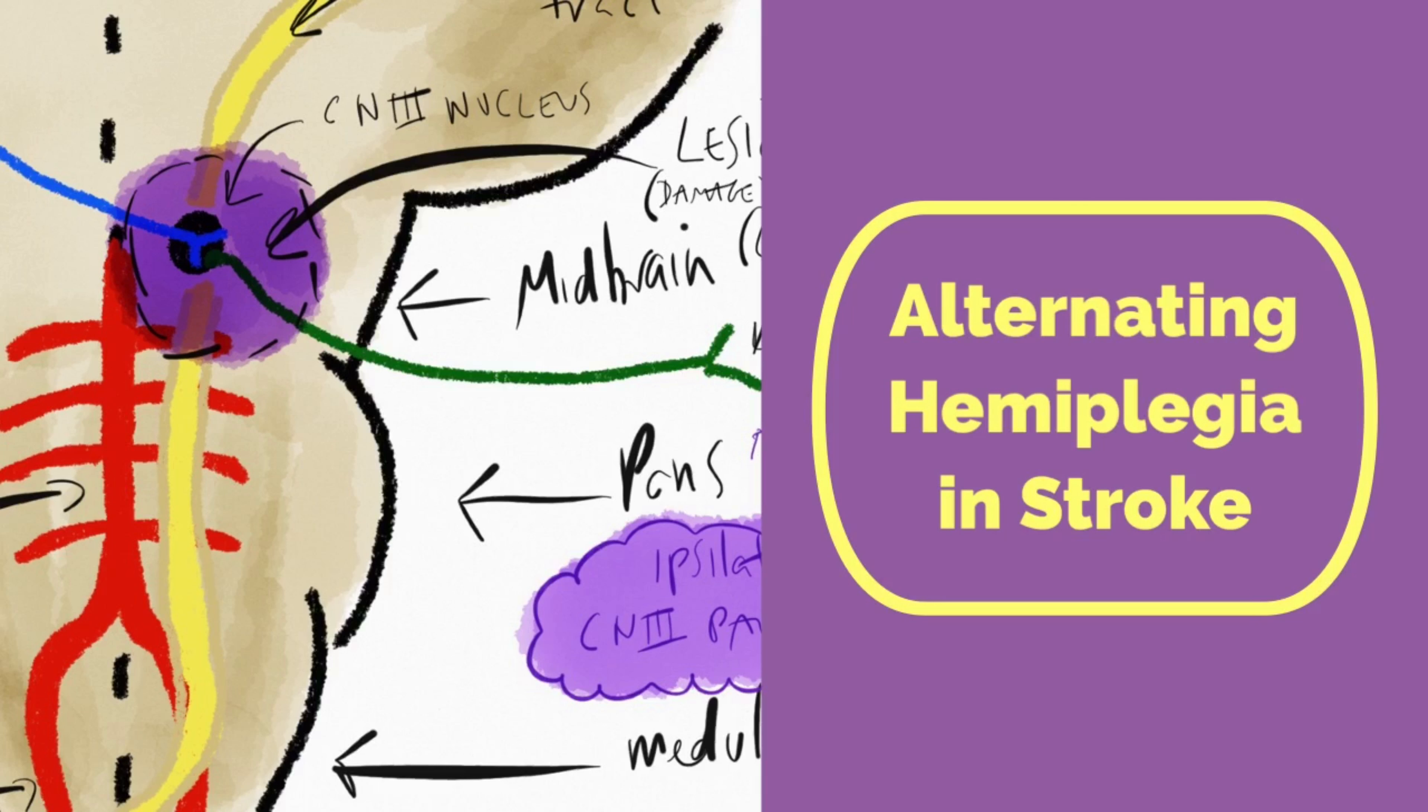Should you come across alternating hemiplegia in stroke, it's an immediate sign that there's an issue going on in the brainstem. We've got our midbrain, pons, and medulla here making up the brainstem.